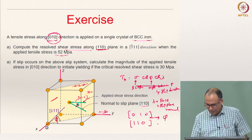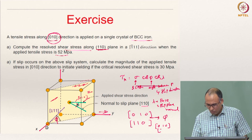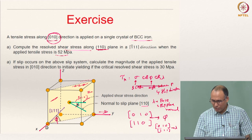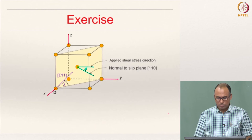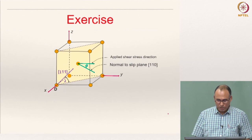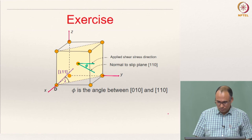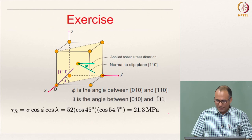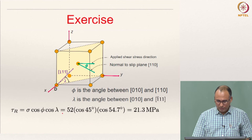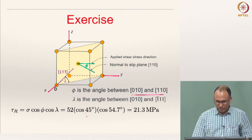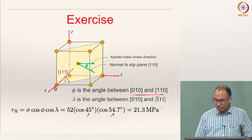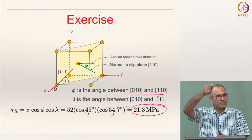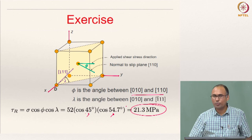Using vector algebra, phi is the angle between [010] and [110], which is 45 degrees, and lambda is the angle between [010] and [1̄11], which is 54.7 degrees. Then tau_r = sigma × cos phi × cos lambda = 52 × cos 45° × cos 54.7° = 21.3 MPa. So although you are applying 52 MPa, the resolved shear stress on that particular slip system is 21.3 MPa.